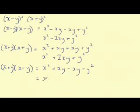So we're left with x squared minus y squared. So writing this again: x squared minus y squared is equal to the product of x plus y and x minus y.